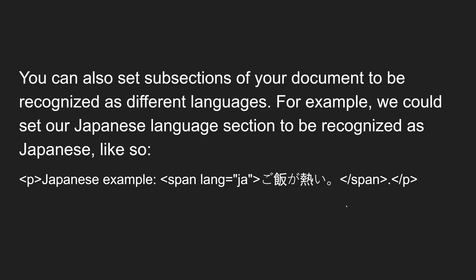You can also set subsections of your document to be recognized as different languages. For example, you could set a Japanese language section to be recognized as Japanese. Even if the whole HTML document has lang=en-us, you can give a specific tag like span lang=ja and add Japanese content inside it. This is also permitted.